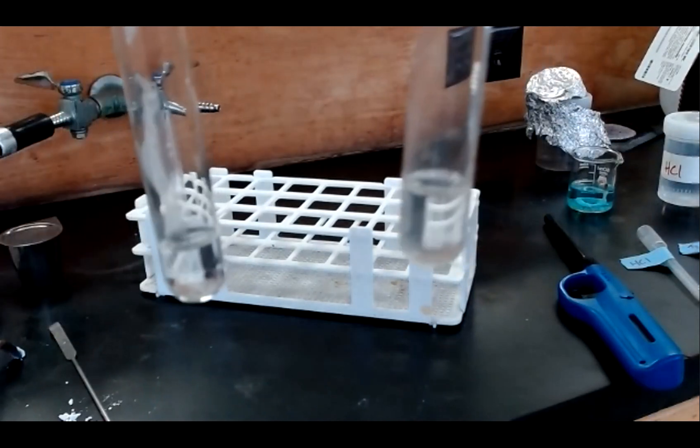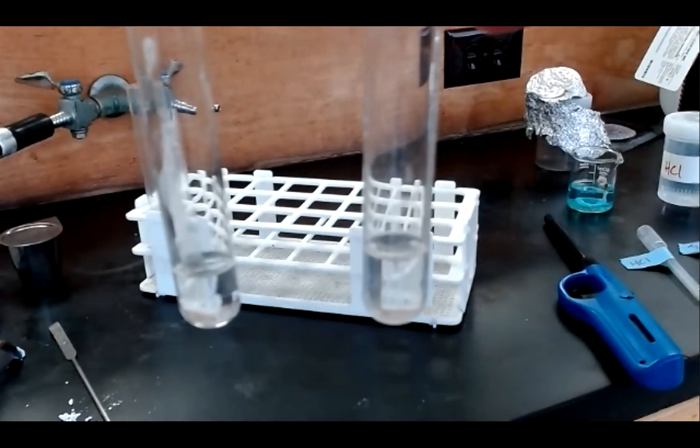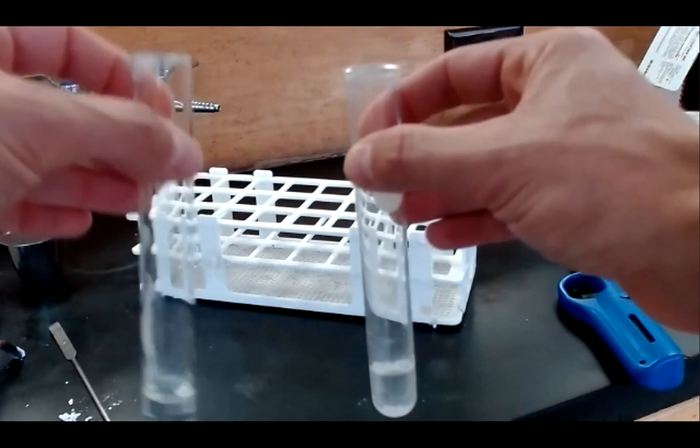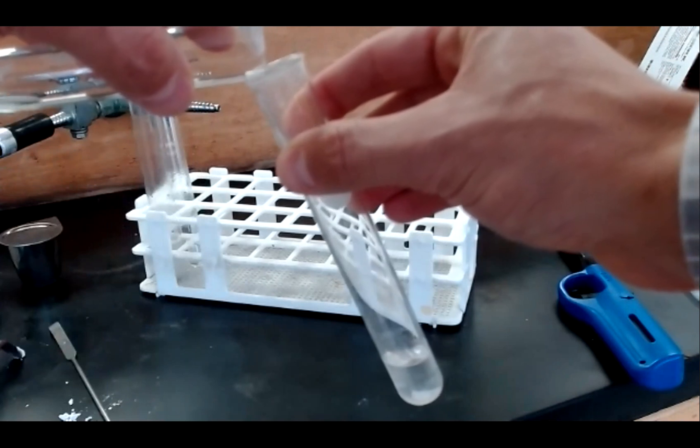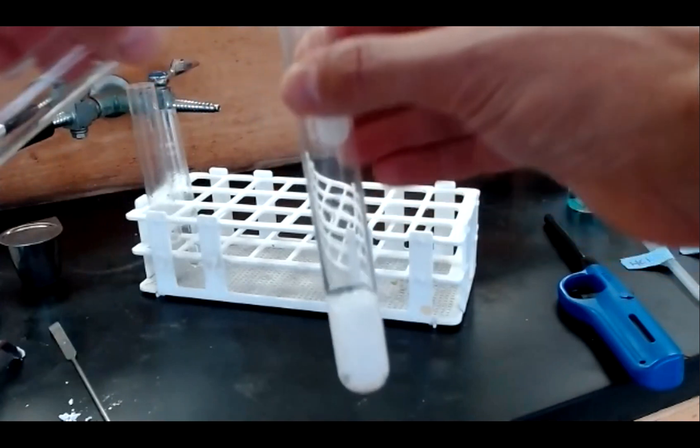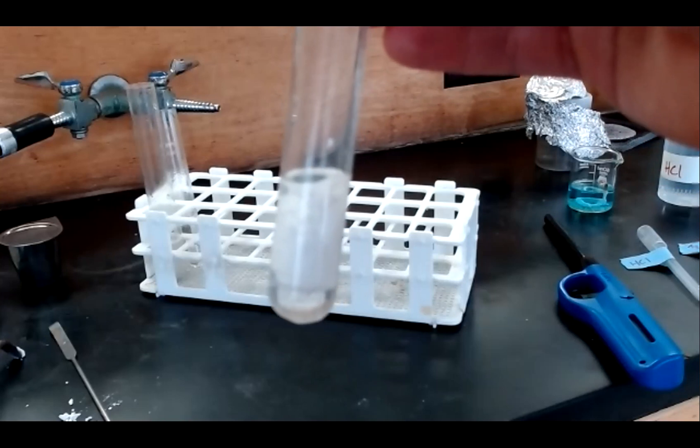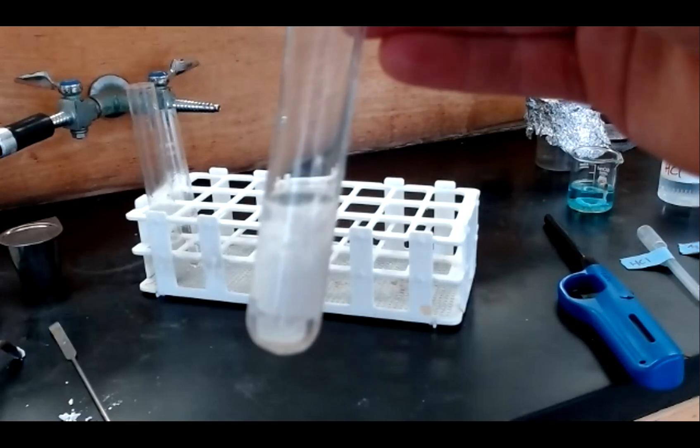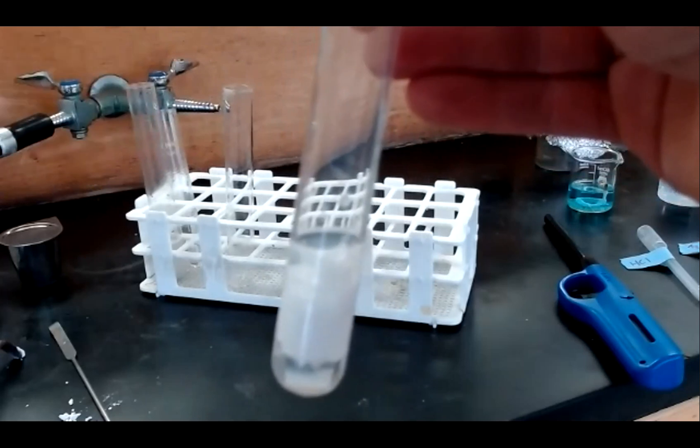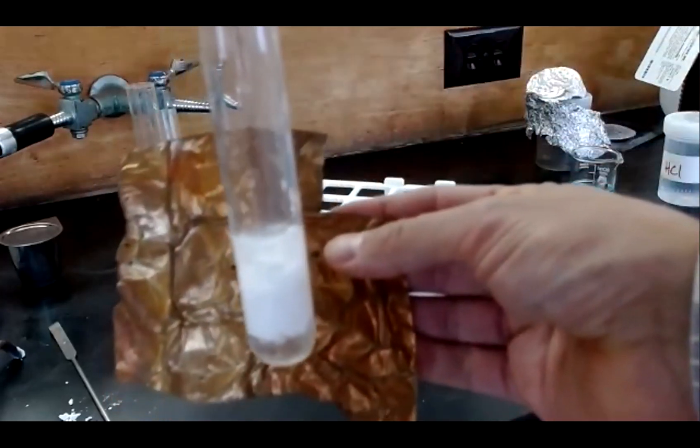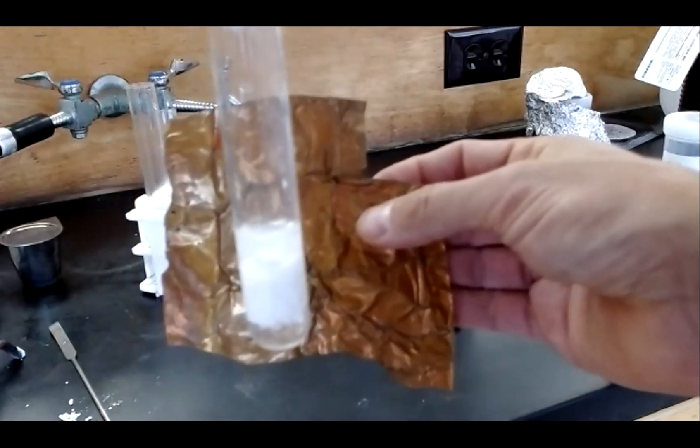There's the solution of hydrochloric acid, there's the solution of silver nitrate, no discernible differences between the two. Now what I'll do is mix the two solutions together. And right away you can see a solid white precipitate beginning to form. Get some contrast against that. There's our solid white precipitate.